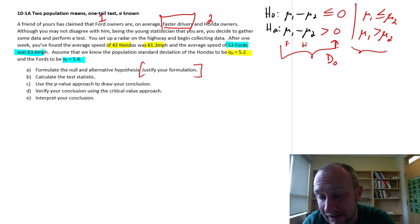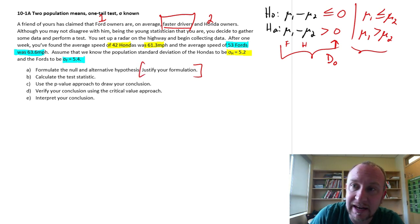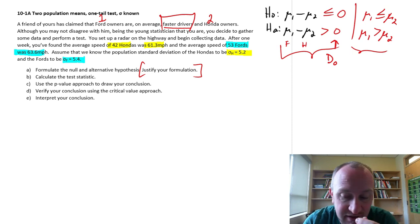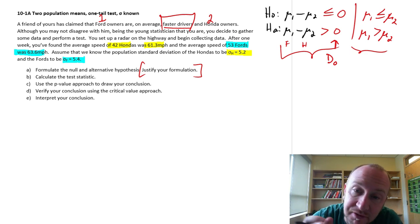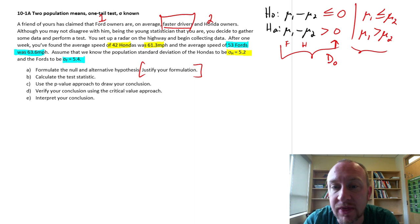Justify this formulation. Well, I have formulated it in this way so that if the evidence supports the alternative hypotheses, then I can show that my friend's claim was right. I do have evidence to show that on average, Ford drivers are faster than Honda drivers. If my evidence supports the null hypotheses, well then I can't support that claim. The evidence would demonstrate that they're no faster than Honda drivers.